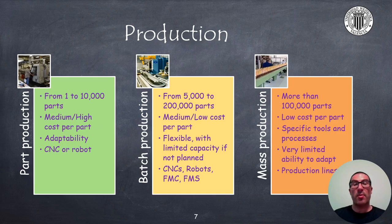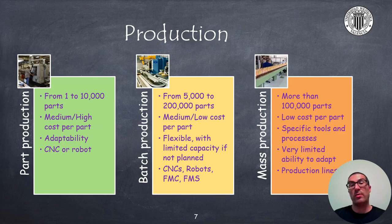A key parameter that determines which type of manufacturing system to use is production volume. If the production volume is low — less than 10,000 units — it is suitable to use a single CNC machine or robot. The cost per unit is usually medium or high, but with great adaptability. When parts are produced in batches of approximately 5,000 to 200,000 units, it is more convenient to use flexible manufacturing cells with one or more CNC machines and robots, achieving medium or low cost per part with great adaptability. A full flexible manufacturing system can also be implemented if the production volume justifies it.